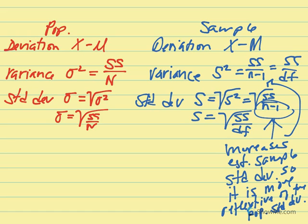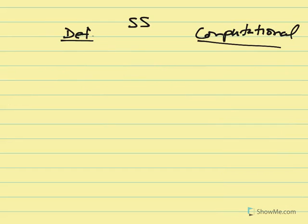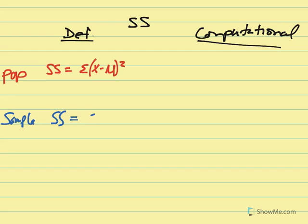Now, in terms of SS, the sum of square deviations, which is necessary to calculate variance and leads right into standard deviation, we have different computational formulas and definitional formulas for both sample and population. So for SS, sum of square deviations for our population, the definitional formula for SS looks like this: SS is equal to the sum of x minus mu squared. And for a sample, SS looks like the sum of x minus M, again that's the deviation squared.